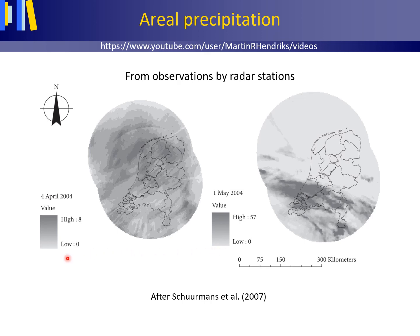Daily precipitation values for the Netherlands on the 4th of April 2004 are shown to the left and for the 1st of May 2004 to the right, estimated from observations by two radar stations. The 4th of April event shows low precipitation values over a large area, whilst the 1st of May event shows high precipitation values over a small area. The latter is most likely the result of regional heating of the air at the Earth's surface, so-called convective precipitation.